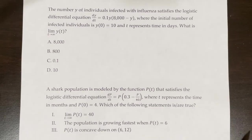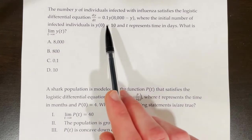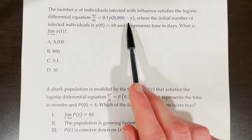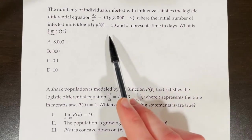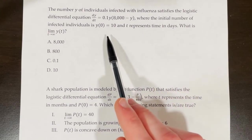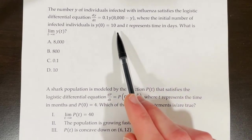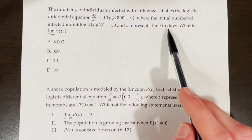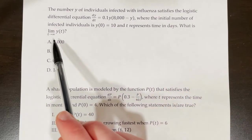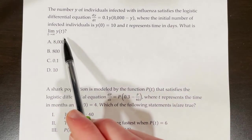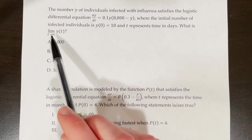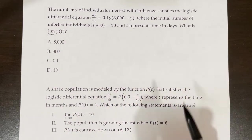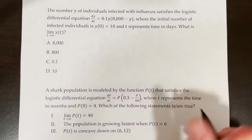Sample multiple choice question: The number y of individuals infected with influenza satisfies the logistic differential equation dy/dt equals 0.1y times (8000 minus y), where the initial number of infected individuals is y(0) equals 10, and t represents time in days. What is the limit as t approaches infinity of y(t)? Since it's asking about the limit as t approaches infinity, it's really asking for our carrying capacity.